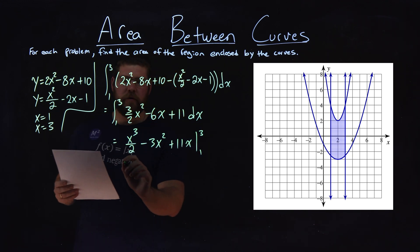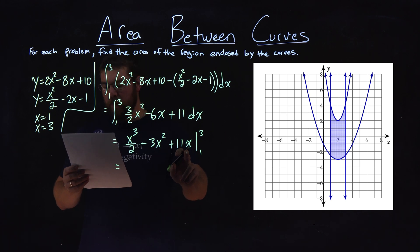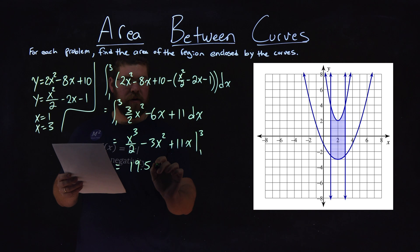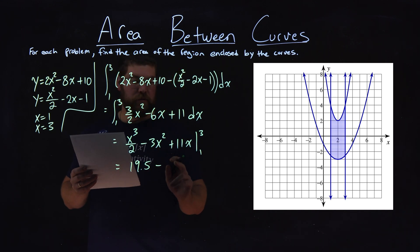Well, the first thing we want to do, we plug 3 in for x, and we solve. And so when we plug 3 in for x and solve, we get 19.5. Subtracting, put a 1 in for x and simplified, and we get 8.5 here.